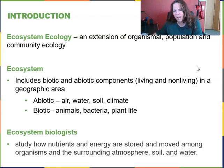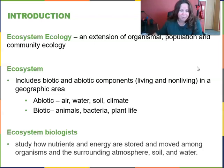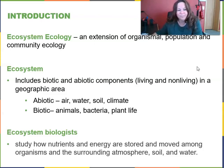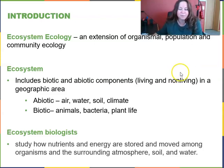Some examples of abiotic items that are non-living include air, water, soil, and climate. Some examples of biotic components of an ecosystem are the animals, bacteria, plant life, fungi, and other decomposers. Ecosystem biologists study how nutrients and energy are stored and moved among organisms and the surrounding atmosphere, soil, and water.